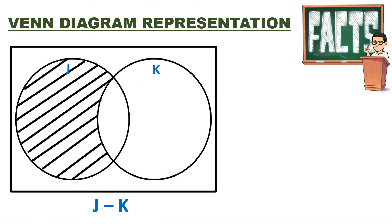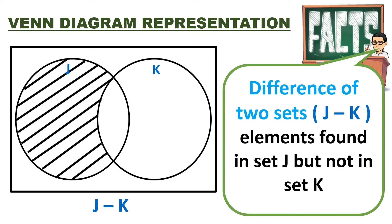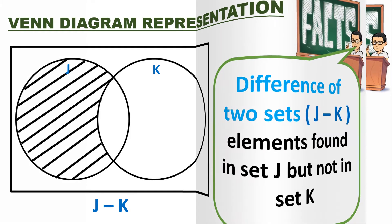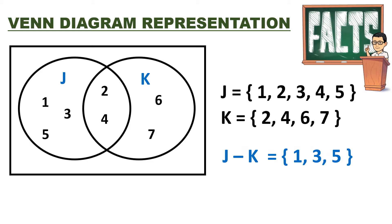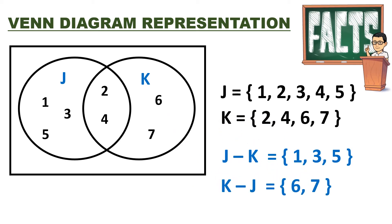Moving on, the Venn Diagram represents the difference of two sets, or J minus K. All the elements found in the shaded area is what we call J minus K — elements found in J but not in K. For our example, J minus K gives us 1, 3, and 5. How about K minus J? This time, all the elements found in set K but not in set J. So, K minus J equals 6 and 7.